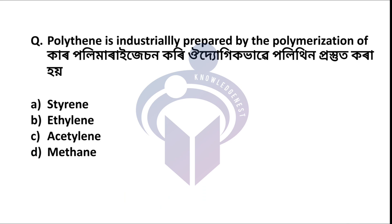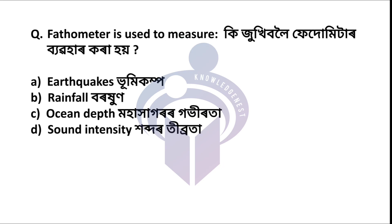Next question: Polythene is industrially prepared by the polymerization of what? The correct answer is option B: ethylene. Ethylene is a hydrocarbon with formula C2H4. Next question: Fathometer is used to measure what? The correct answer is option C: ocean depth — it measures the depth of the ocean.